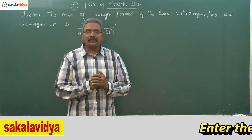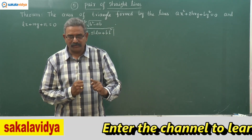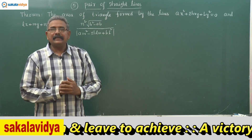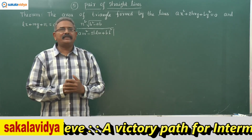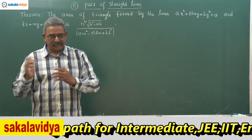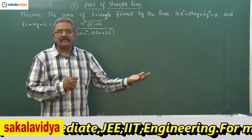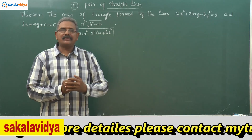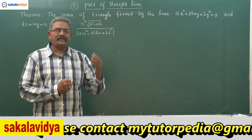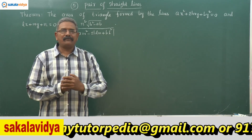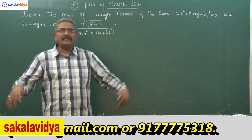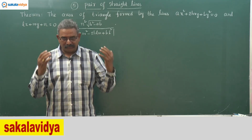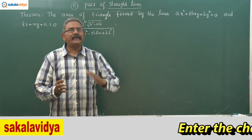We need to find the point of intersection of l₁x + m₁y = 0 and lx + my + n = 0 to get one vertex. Similarly, the second equation is solved with lx + my + n = 0 to get the third vertex. The origin (0, 0) is one vertex. Let x₁, y₁ be the intersection of the first line with lx + my + n = 0, and x₂, y₂ be the intersection of the second line with lx + my + n = 0. Then the area of the triangle is Δ = ½|x₁y₂ - x₂y₁|.